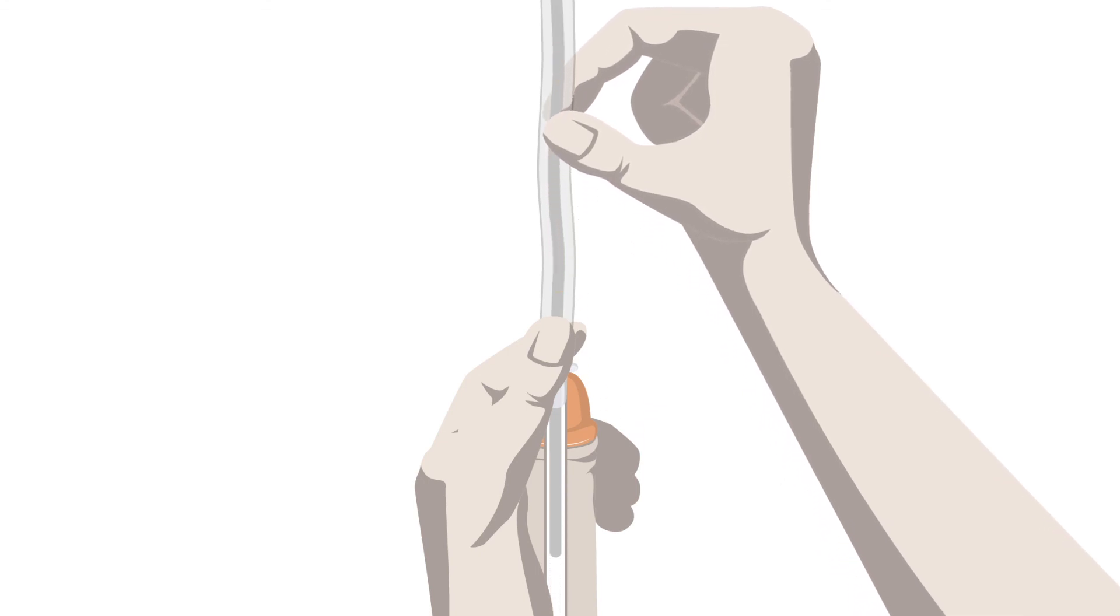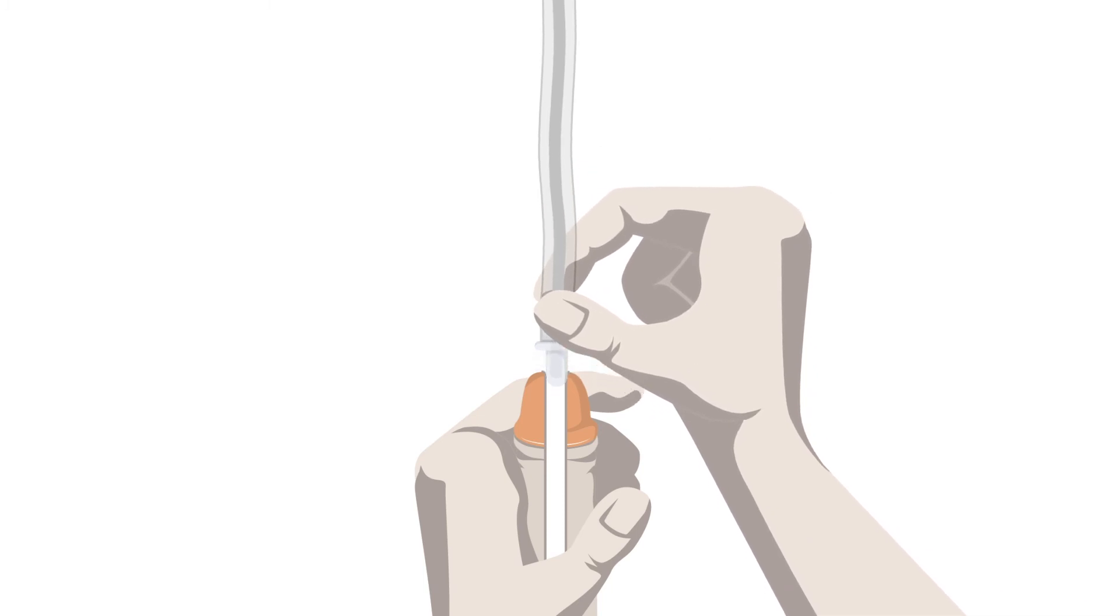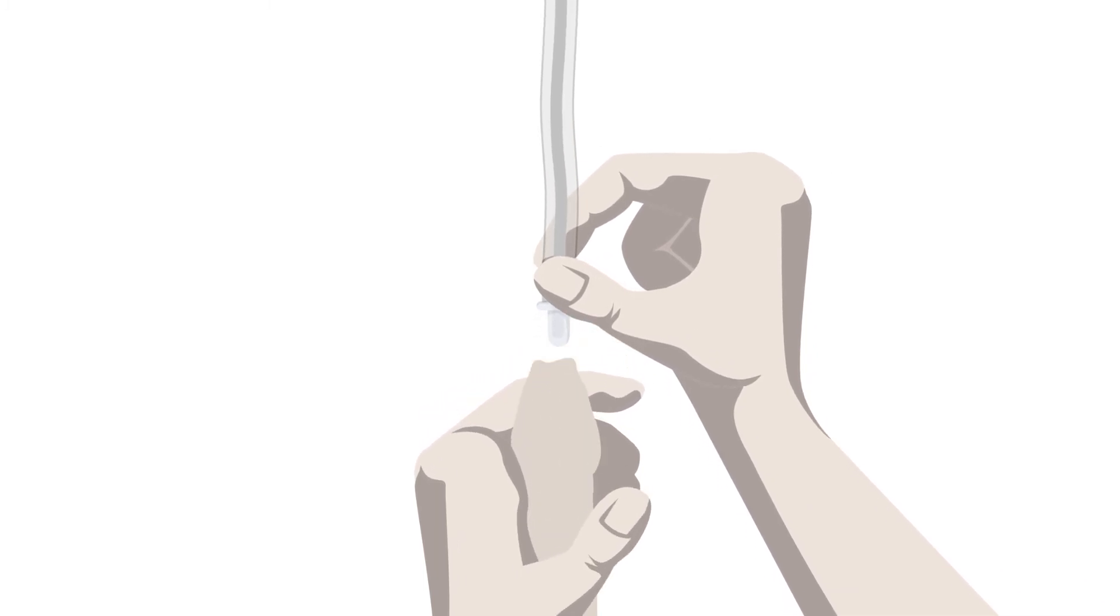you can slowly and gently withdraw the catheter, allowing for any pockets of urine at the base of the bladder to drain. When there is no further flow of urine, remove the catheter and then replace your foreskin, unless circumcised.